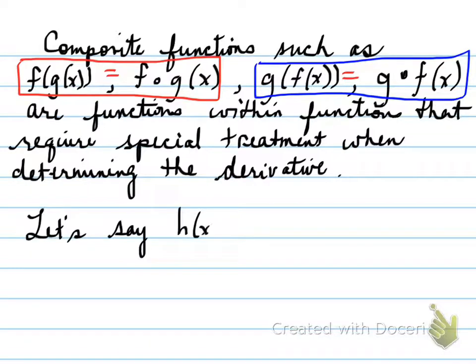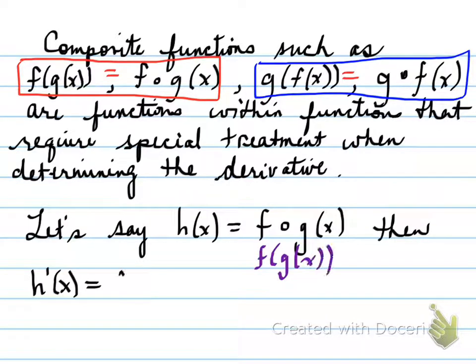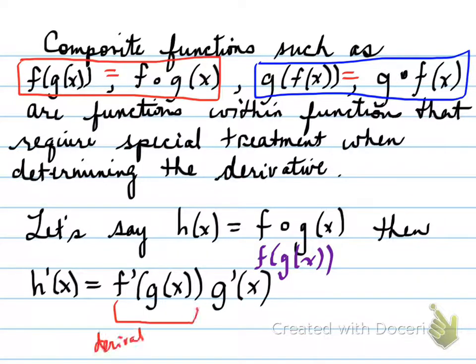Now let's say h of x is equal to the composition function f of g of x. The derivative of that composition function is the derivative of f with respect to the function g of x times the derivative of g of x. That is basically the derivative of the outside times the derivative of the inside. All right, let's keep going.